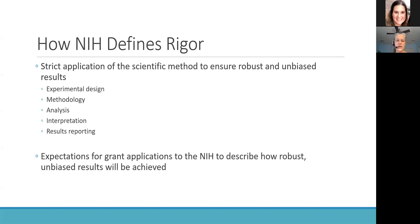Some of the factors to consider when thinking about achieving scientific rigor and avoiding bias include experimental design, the methodology we're going to use, how we might analyze the data, the type of interpretation we anticipate being able to make, and how we want to report our results. Given all of this, the NIH has an expectation that we address these different aspects of rigor throughout our research strategy — ensuring our results are robust, reproducible in another lab, and unbiased or as unbiased as possible.